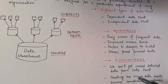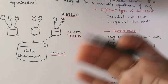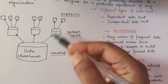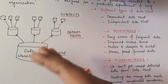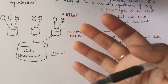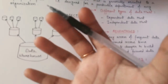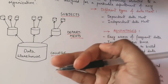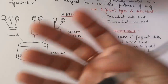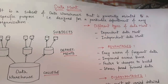Now the disadvantages of data mart: first, we cannot get varied detailed data from a data mart. For example, if I have the data of the computer department but I want to compare it with the IT department, I cannot do it from this data mart because it has no IT department data. In a data warehouse we can have varied detailed data as needed. The second disadvantage is that creating too many data marts becomes complicated — for every new specific information we need, we have to create a new data mart, which can become somewhat complicated.